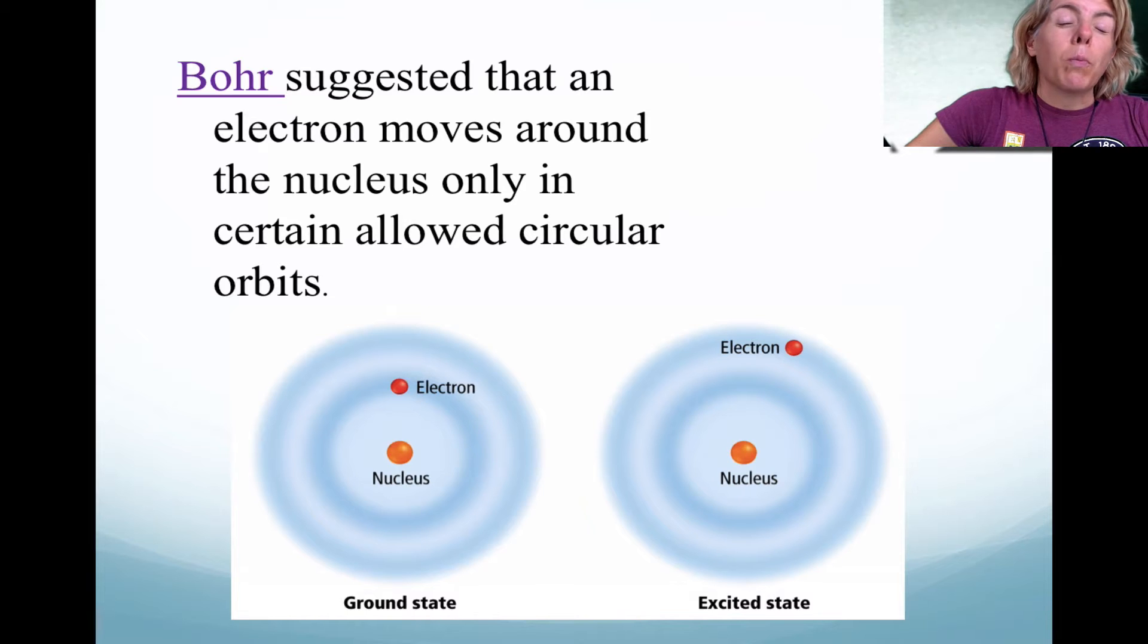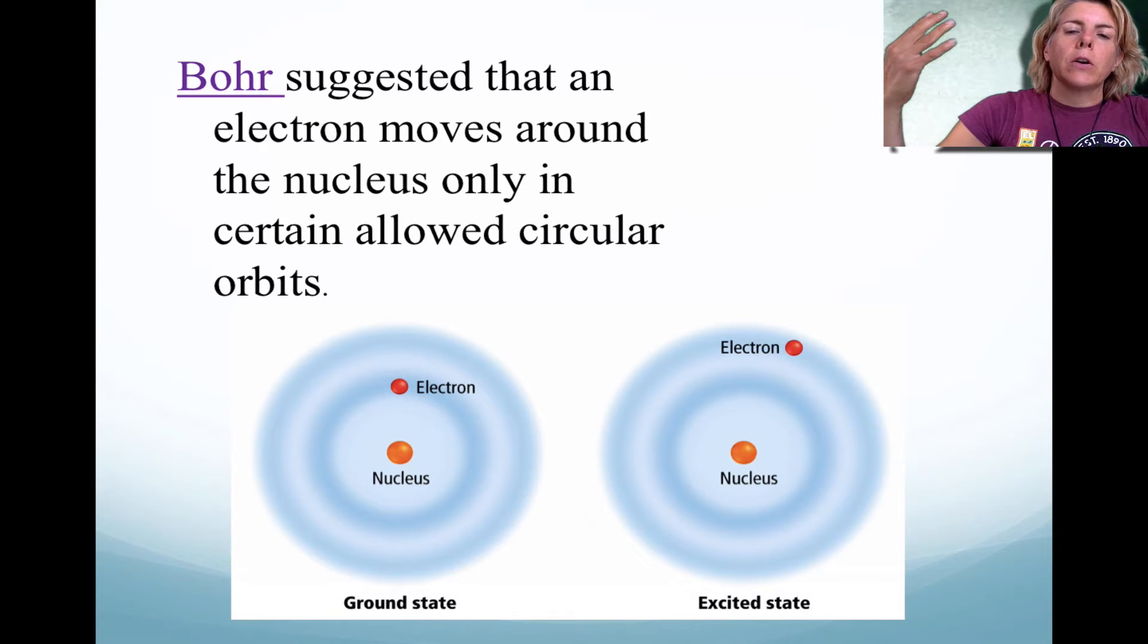There was a man by the name of Bohr who used the world around him that he knew to help describe this phenomenon. He knew that the planets circled the sun, so he thought, why can't electrons just circle the nucleus? And he came up with the idea that when the electron circles the nucleus, when it absorbs energy, it goes to a higher orbit.